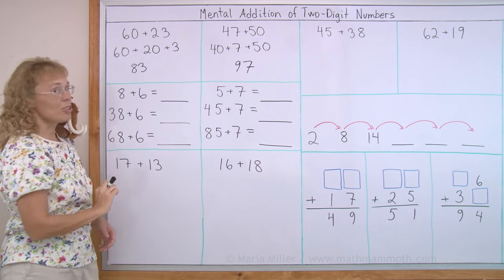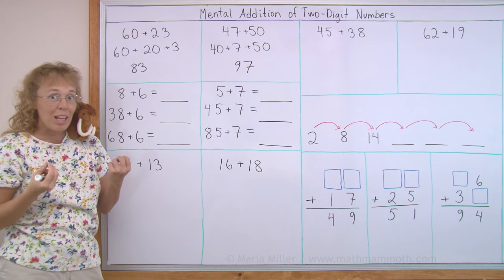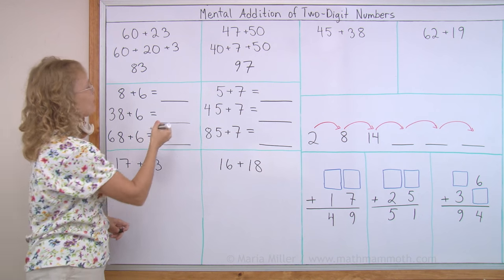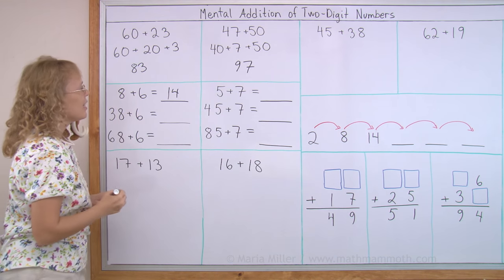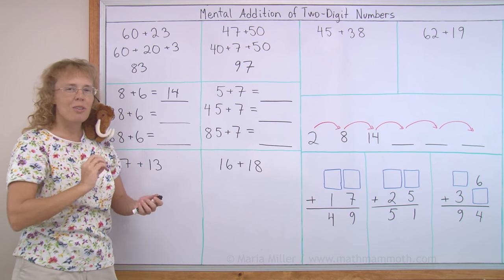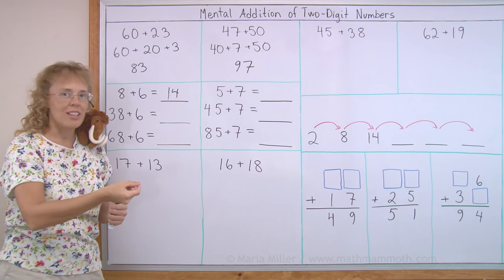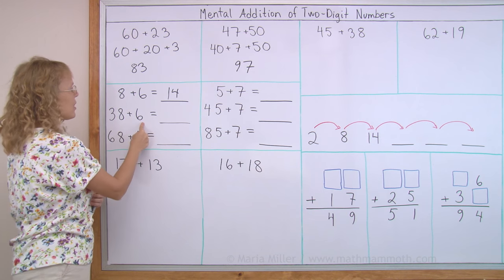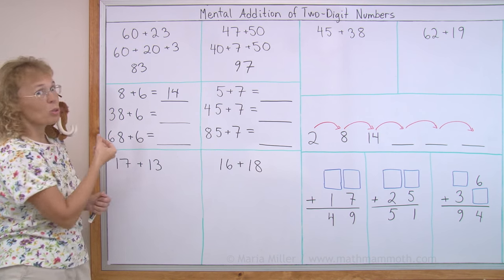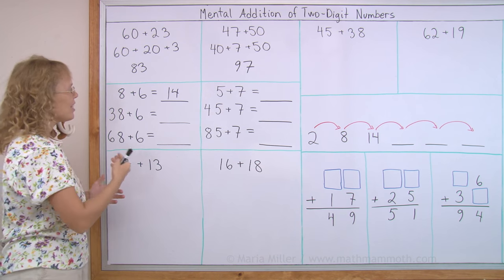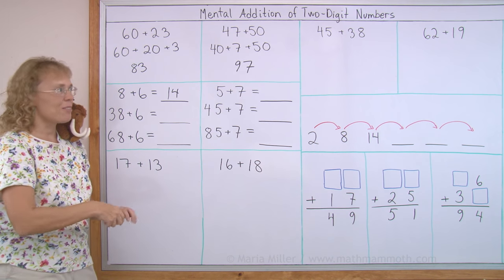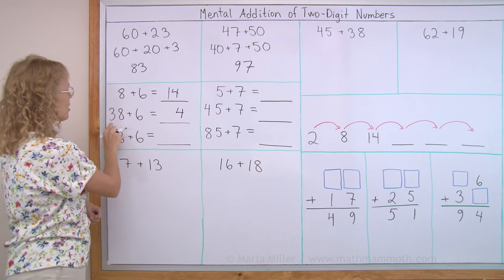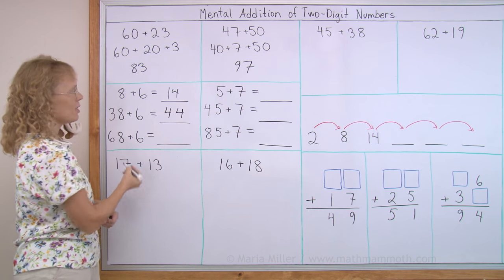Now, this one here shows a different principle, and that is the helping problem idea. 8 plus 6, we remember what it is. It is 14. It is 1 ten and 4, or it is 4 more than the 10. Now, this one here is almost the same. It is 38 plus 6. It has the 8 plus 6, so to speak, in it. The answer will be 4 over the next 10, 4 more than the next 10, so it ends in 4. But here's 30, the next 10 is 40.